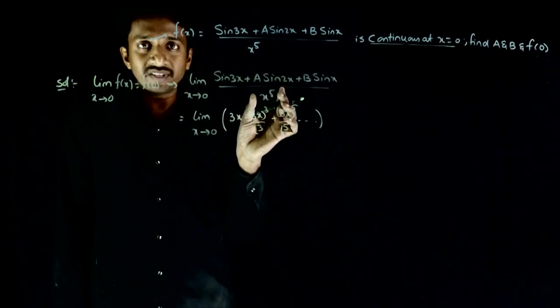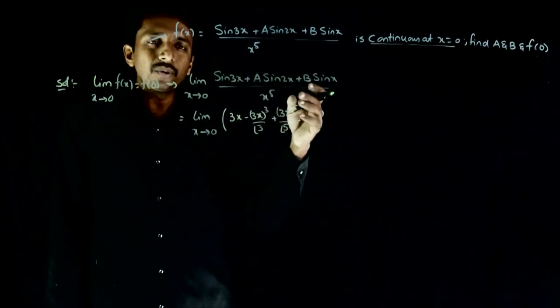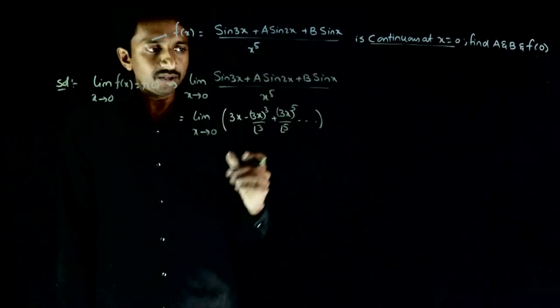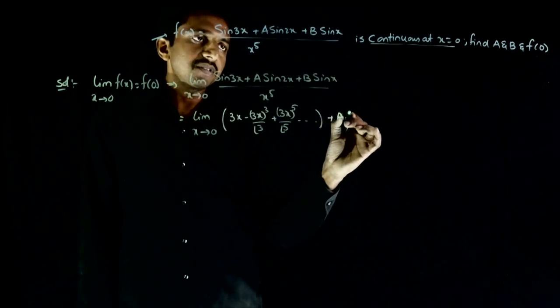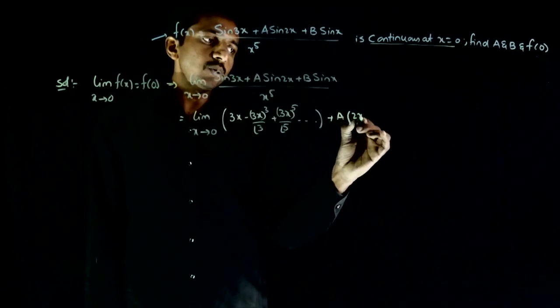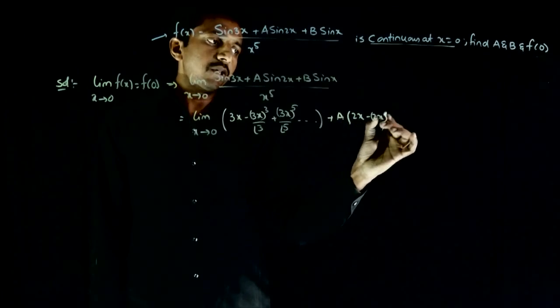In the denominator the highest power, the least power is x power 5. So I don't need to go more than x power 5. In the numerator, x power 5 is sufficient. Plus a times sin 2x expansion is 2x minus 2x whole cube